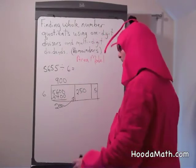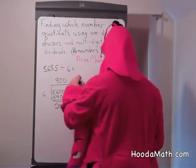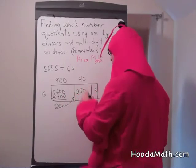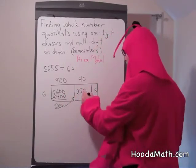6 goes into 25 about 4 times, but we have to put a 0 because it's 250 that is the dividend here.